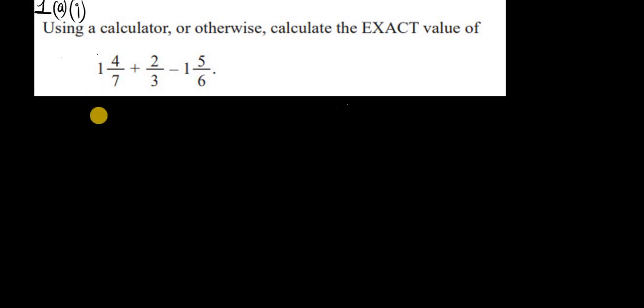The first question is, without using the calculator, calculate the exact value of 1 and 4 sevenths plus 2 thirds minus 1 and 5 sixths. The first step is to convert those mixed numbers to improper fractions. Mixed numbers are those with a whole number part and a fractional part. To convert, we multiply the whole number by the denominator, then add that product to the numerator.